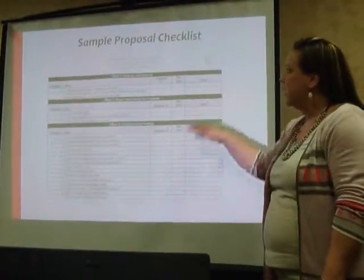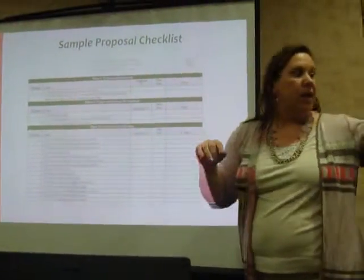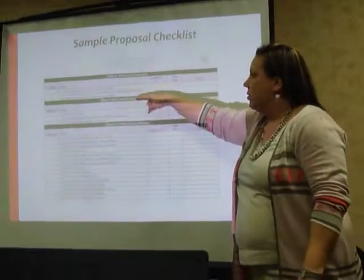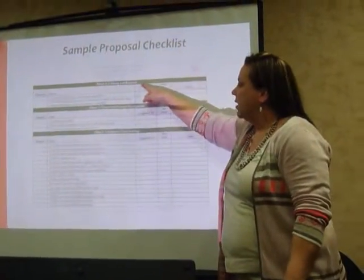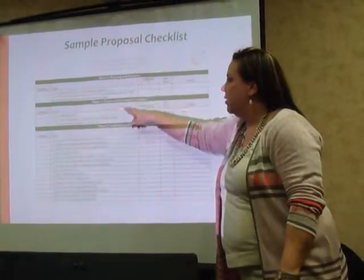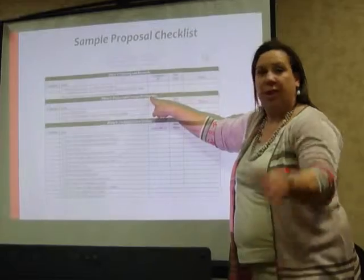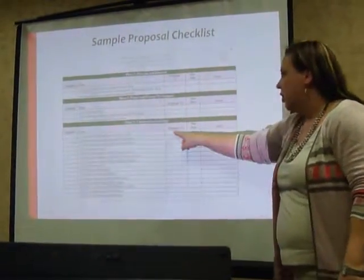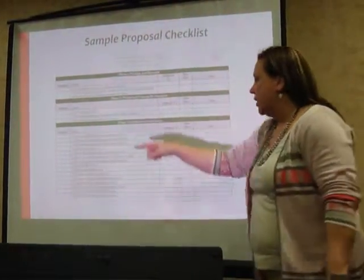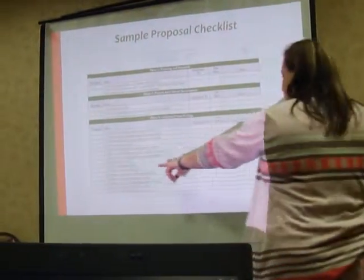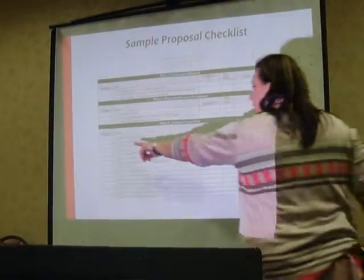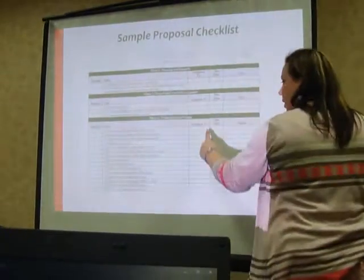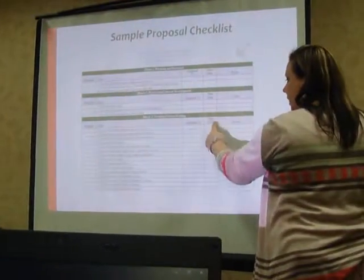We've updated this template to include our model for discussing different tasks — like during planning and research, what are all the things you have to do; during project and concept development, what do you have to do; technical grant writing, what do you have to do. Then there's a timeline column where you can put one month out, three months out, whatever you want, and assign it to someone with a due date.